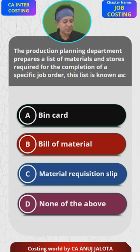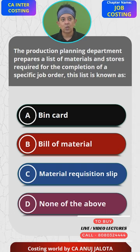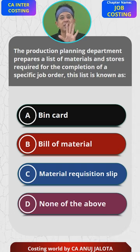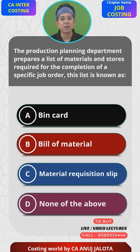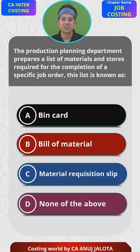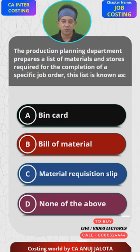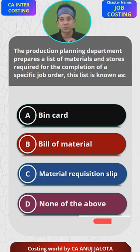A bin card is in the stores department where goods are kept on racks. On every rack, a specific type of material is kept. Against each rack there is a card that hangs — that is called a bin card. Bin card records what goods are received when the supplier sends a fresh quantity (on the receipt side), and when materials are taken by workers (on the issue side). So a bin card keeps a quantitative track of how much raw material is available.